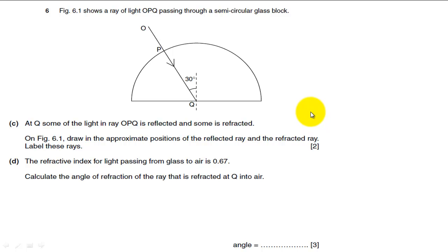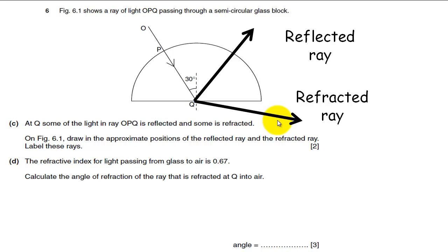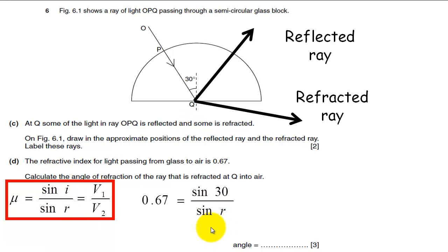Draw in the approximate positions of the reflected ray and the refracted ray. This is just approximate. You'll get a bit of reflection, it'll be like partial reflection, and it will have to be 30 degrees and 30 degrees, the law of reflection. Angle of incidence equals angle of reflection, and you'll get a bit of refraction going on as well. The refractive index for light passing from glass to air is 0.67. First thing for me to do is just write down Snell's law. I've got sine I, I've got the refractive index, and I'm trying to find sine R.